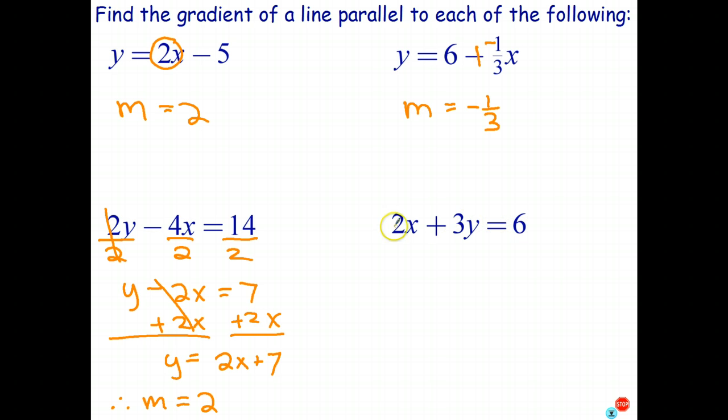Okay, similarly, we need to make y the subject of this equation just here. So the first thing I'm going to do, I'll get the 3y by itself. So I'll subtract 2x from each side, like so. So that crosses out, leaving just the 3y equals 6 subtract 2x. That, of course, can't be simplified because they're not like terms.